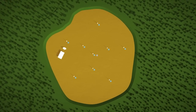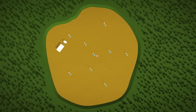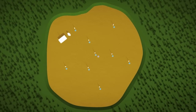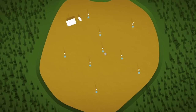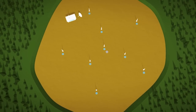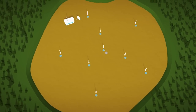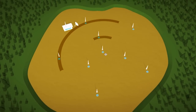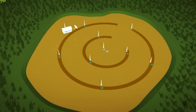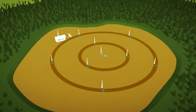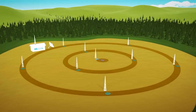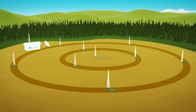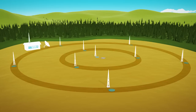Here you see a typical seismic station built as an array. Some arrays can consist of up to 25 seismometers. This one has 10. They are arranged in two concentric circles with two seismometers in the center.